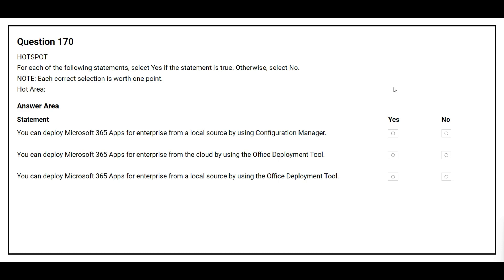Question number 170. For each of the following statements, select yes if the statement is true, otherwise select no. The first statement: you can deploy Microsoft 365 apps for enterprise from a local source by using Configuration Manager. The correct answer is yes. The second statement: you can deploy Microsoft 365 apps for enterprise from the cloud by using the Office Deployment Tool. The correct answer is yes.